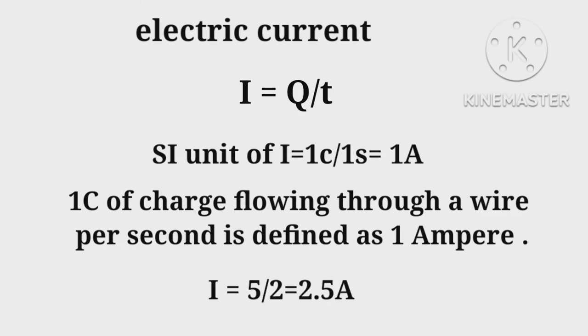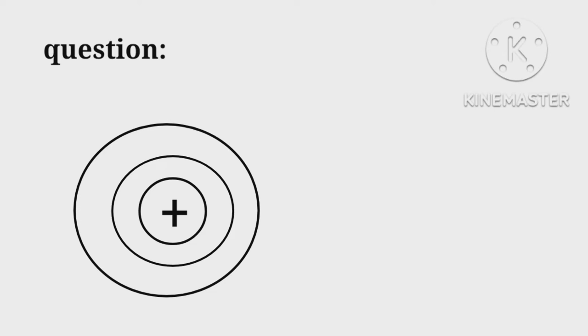I = 5/2 = 2.5 amperes. Let us take some questions. What happens when five electrons are gone out of the surface of an atom?